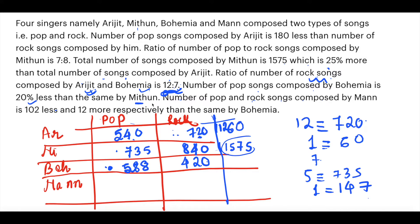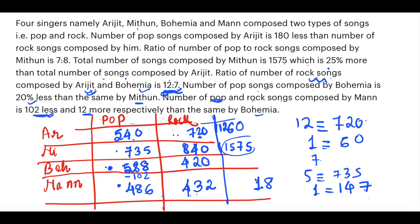The number of pop and rock songs composed by Man is 102 less and 12 more respectively than that of Bohemia. So Man's pop = 588 − 102 = 486, and Man's rock = 420 + 12 = 432. Bohemia's total = 588 + 420 = 1008. With the full table complete, it will be easy to solve the questions.